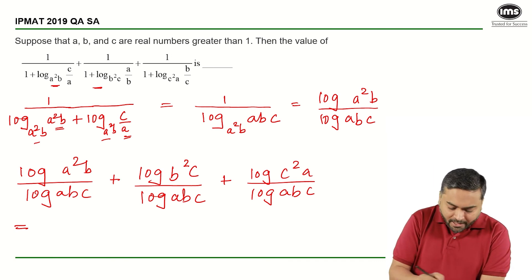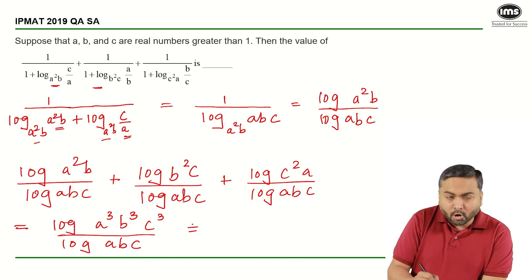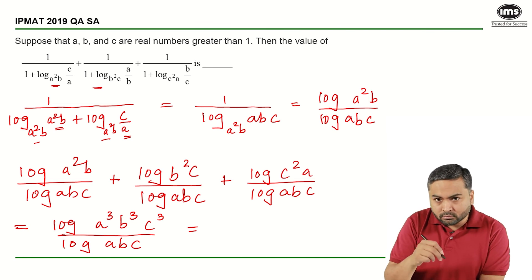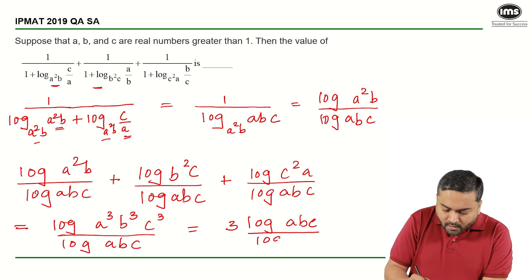So what will I get? Log of a cube b cube c cube upon log of abc. That is log of abc the whole raised to 3 upon log abc, that will be log of abc upon log abc. Now this gets cancelled out and that is what we had got by the earlier approach as well.